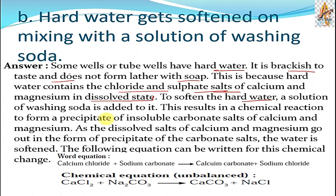To soften the hard water, the solution of washing soda is added to it. This results in a chemical reaction to form a precipitate of insoluble carbonate salt of calcium and magnesium. As the dissolved salts of calcium and magnesium go out in form of precipitate of carbonate salt, the water is softened. Following here is equation: calcium chloride plus sodium carbonate gives calcium carbonate and sodium chloride. Here is the chemical equation.